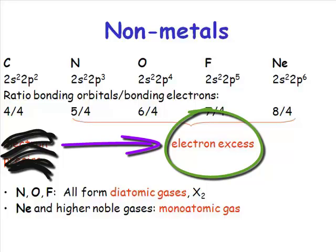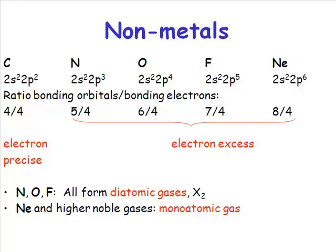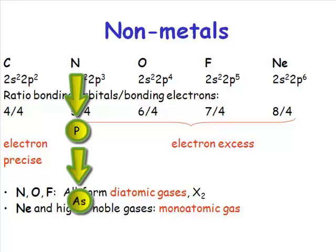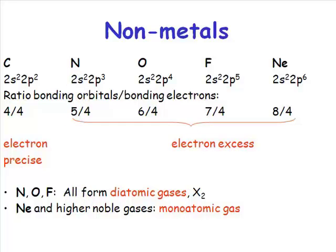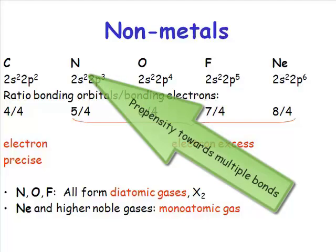And there are two main consequences of this chemistry. If we move from nitrogen down to phosphorus and arsenic, you'll see with nitrogen, because nitrogen is small, because those p-orbitals can overlap very efficiently, then in the case of nitrogen, what we see is a propensity towards multiple bonds.